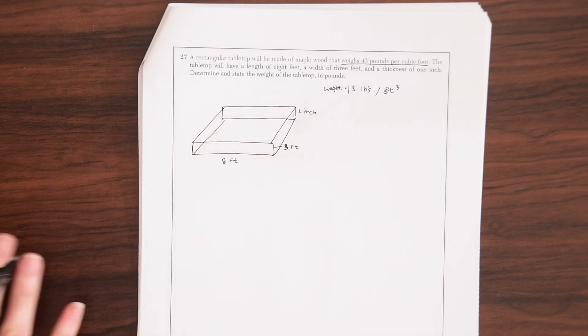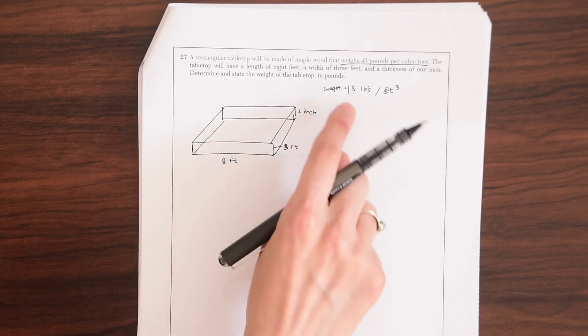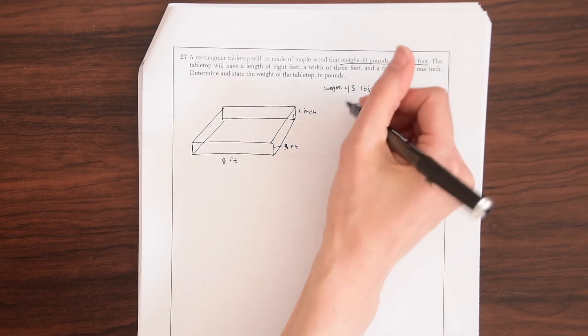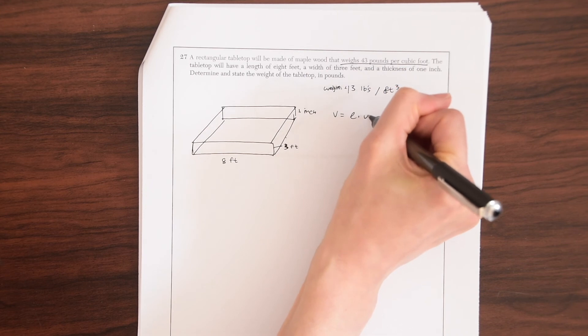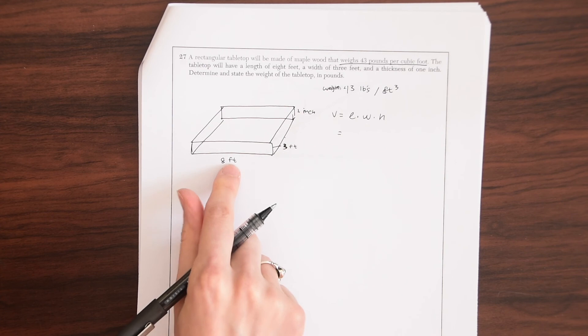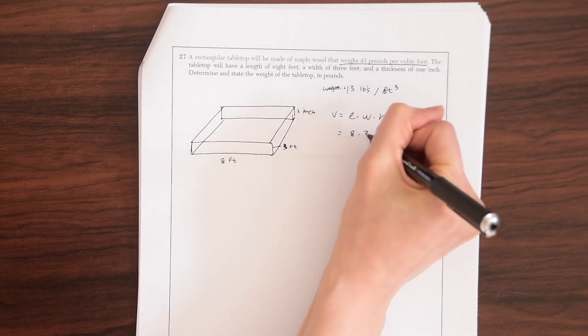Determine and state the weight of the tabletop in pounds. So we're going to want to find the volume of this shape, and then we're going to want to multiply it times the weight, because this is in feet cubed. So the volume is always length times width times height of a shape like this. So if we're given the length times width times height, we just get 8 times 3.